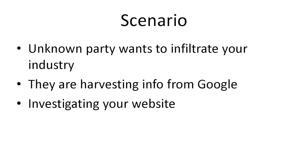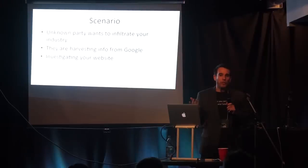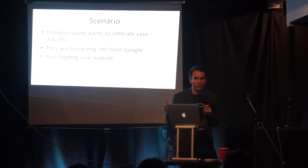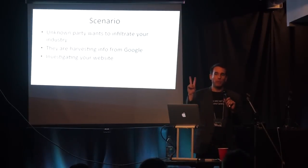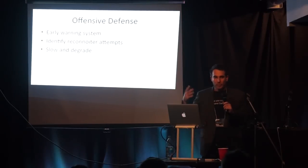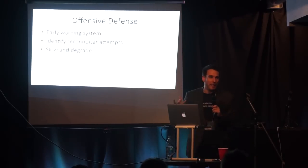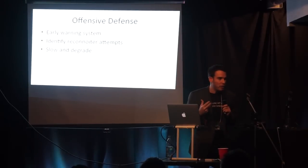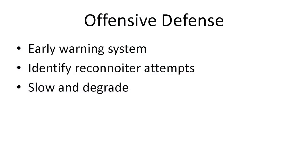The example I'm going to use is the robots file. Every website, in order to tell search engines what you want them to cache and what you don't, usually lists off stuff that is supposedly private. But as an attacker, that would be the first place I'd want to go to look at stuff that's supposed to be secret. The idea here is to create a system that can alert us when people are doing this kind of investigation into your company — you want to know ahead of time when someone is looking at places they shouldn't.